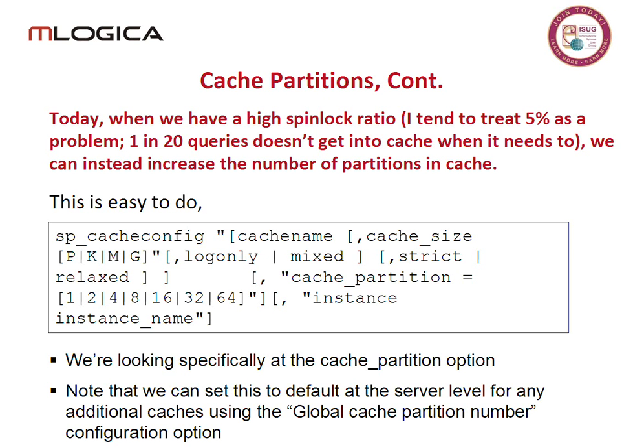Most spin lock parameters you adjust on the server are relatively flexible, usually as percentages. For address locks, by default the address spin lock ratio is 100, meaning one spin lock manages 100 address locks. Drop that to 25 and one spin lock manages only 25 address locks. If you have address lock issues, you manage the percentages — what you're doing is creating additional spin locks. It's a slightly different approach.